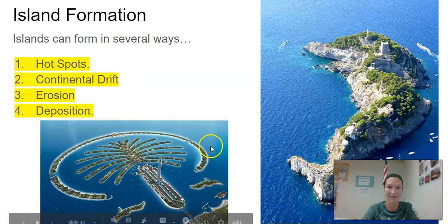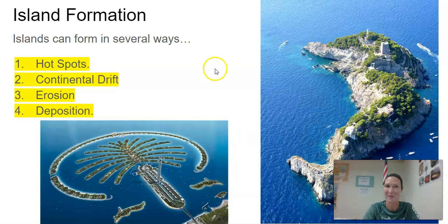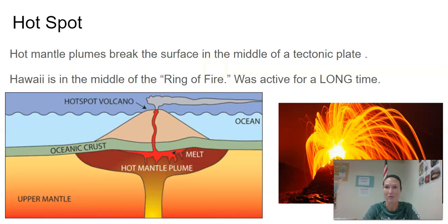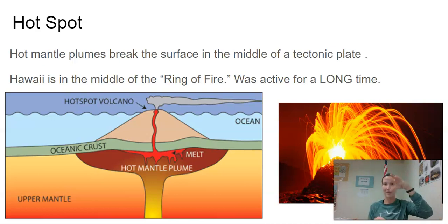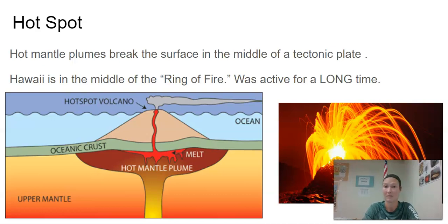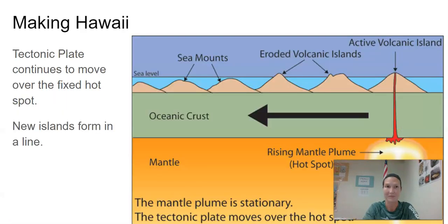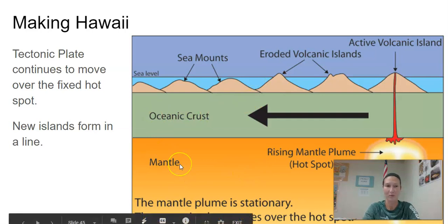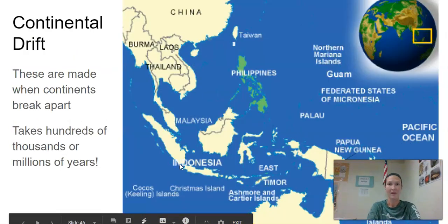Some islands can be man-made, like if they're bringing in sand, and some are nature-made. A hotspot is when the hot mantle plume breaks the surface in the middle of a tectonic plate — this is Hawaii. That hot mantle plume comes up, builds and builds an island, then slowly the plate moves. It was active for a really long time, just erupting and erupting and building up all of the Hawaiian islands. The oceanic crust moves while the mantle plume stays in the same spot, which is why they normally form in a line. As islands move away from the hotspot, they actually start to shrink again because they get eroded by the waves.